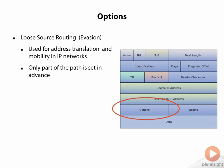Loose source routing can be used for evasion attacks. However, when it is used, it is often defining a partial route list for a packet to take on its journey from the source to the destination.